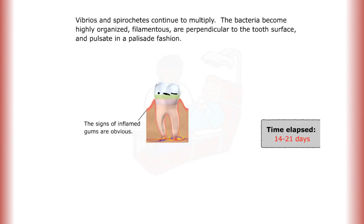Vibrios and spirochetes continue to multiply. The bacteria become highly organized, filamentous, are perpendicular to the tooth surface, and pulsate in a palisade fashion.